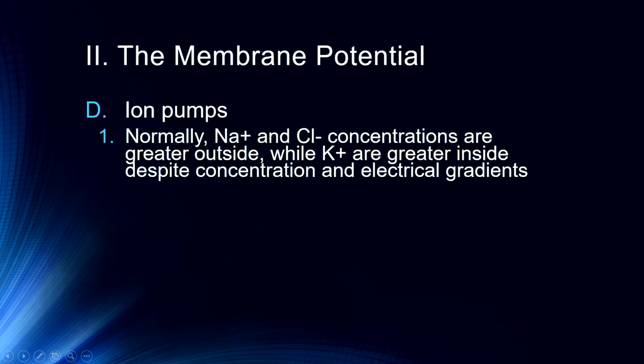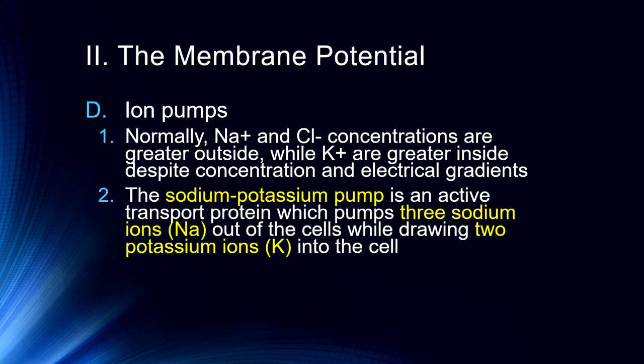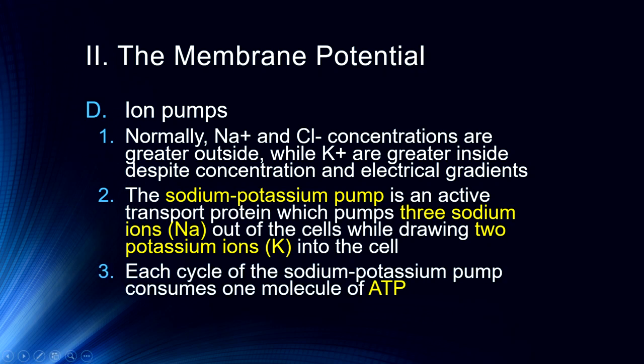Normally, sodium and chloride concentrations are greater outside the cell while potassium is greater inside, despite concentration and electrical gradients — and the sodium-potassium pump is responsible for that. This active transport protein pumps three sodium ions out while drawing two potassium ions in, constantly maintaining that charge across the membrane. Each cycle of the pump consumes a molecule of ATP, so neurons use a lot of ATP — one reason we look at where the brain is using glucose, since glucose is an important part of the Krebs cycle, reflecting the large amount of energy consumed by sodium-potassium pumps throughout the brain.